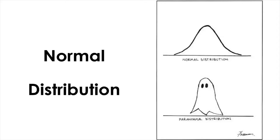Many naturally occurring measurements of random variables, such as height, weight, intraocular pressure, or even the errors of all these measurements, are actually known to follow normal distribution. This is considered one of the most important distributions in statistics, because it is the base distribution from which other statistical distributions are derived.